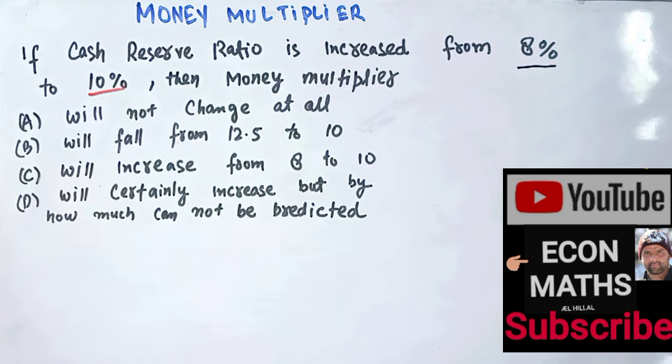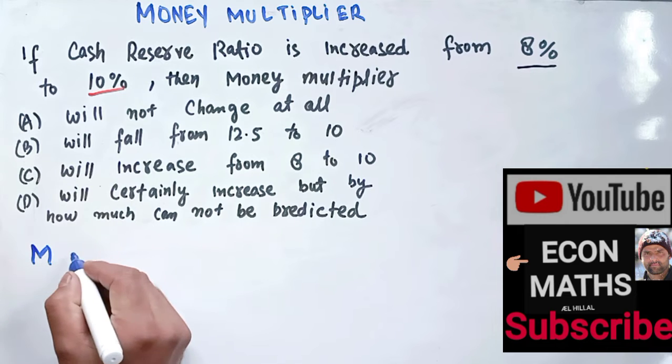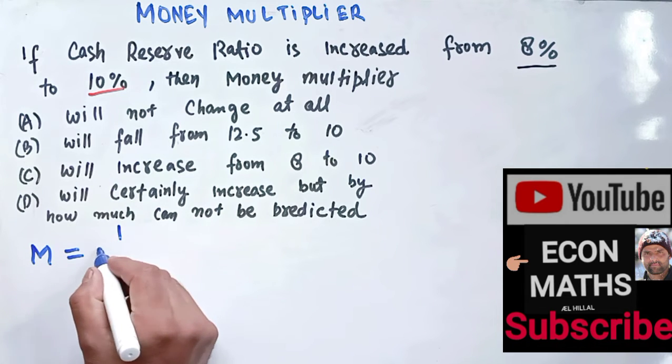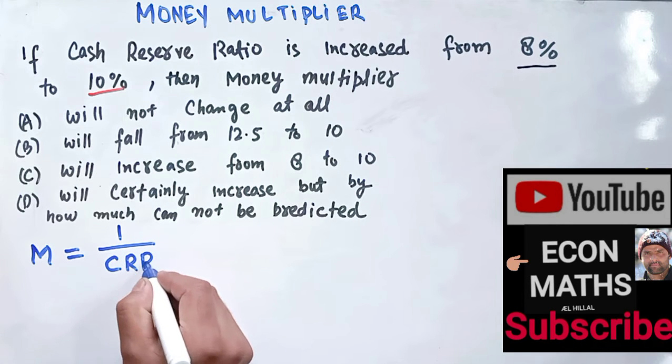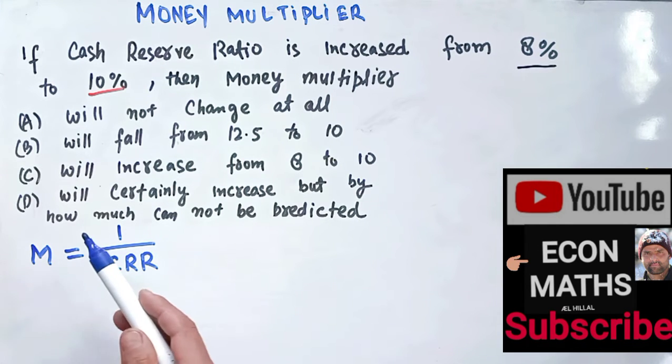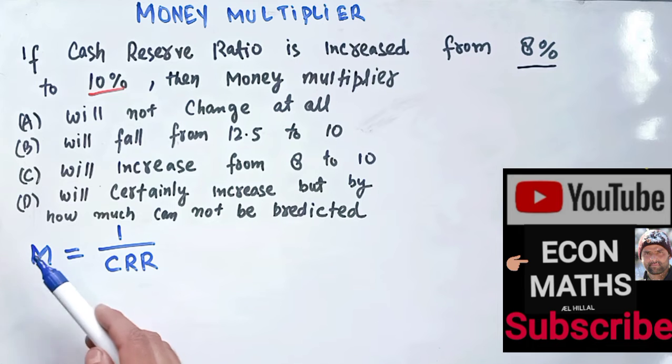So basically, what is our money multiplier? Money multiplier is equal to 1 upon the reserve ratio, here it is cash reserve ratio. So there is an inverse relationship between money multiplier and CRR. That means the smaller this CRR is, the bigger will be our money multiplier.